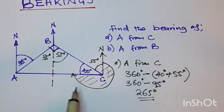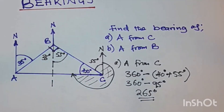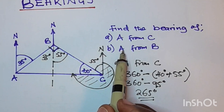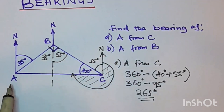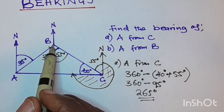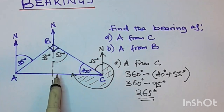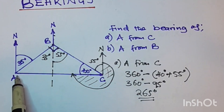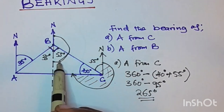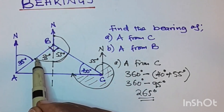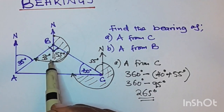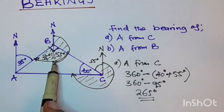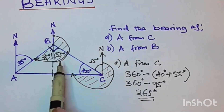For part b, they say find the bearing of A from B — the bearing of A whilst you are standing at B. We already have a north drawn, so we move clockwise from the north until we reach the line AB. The bearing they are looking for is this angle here.